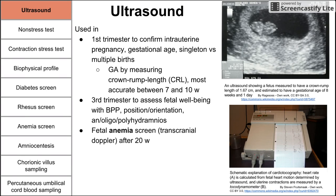Ultrasound can be used for fetal anemia screening using a transcranial Doppler, which occurs after 20 weeks. The method here is that high-velocity blood means baby's hemoglobin is low. When blood is thick and viscous, hemoglobin is high; when blood is slow and less viscous, that means hemoglobin is low.